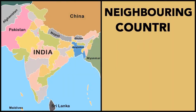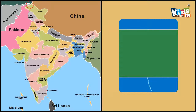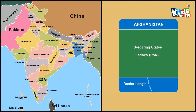There are nine neighbouring countries of India. The Indian state Ladakh shares the border with Afghanistan. The border length is 106 km.